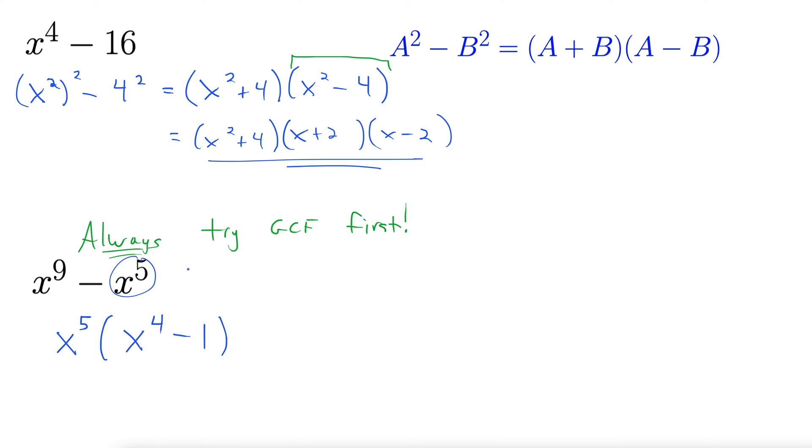Now that we've factored out our GCF, we can see our difference of squares. And it's the same as the problem we just finished, the same idea. So this x to the 5th is going to hang on. And then we can use this difference of squares formula, x squared plus 1, x squared minus 1.